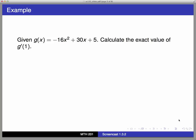So here's our main example. We're going to take the function g(x) = -16x² + 30x + 5, and we're going to calculate the exact value of g'(1), the derivative of g at the number 1.